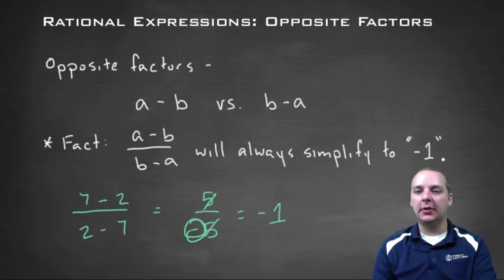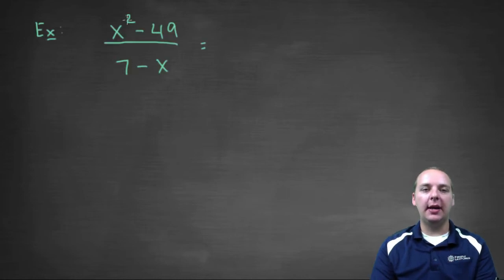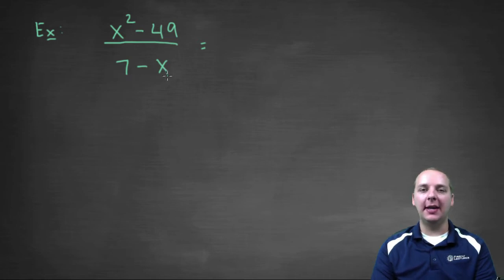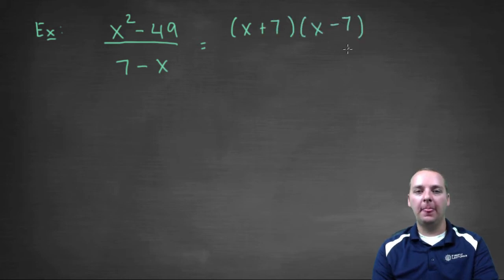Let's take a look at an example. Let's say we had x squared minus forty-nine divided by seven minus x — it's a rational expression. The numerator is going to factor because it looks like a difference of squares, so we'd have x plus seven times x minus seven, all divided by seven minus x.